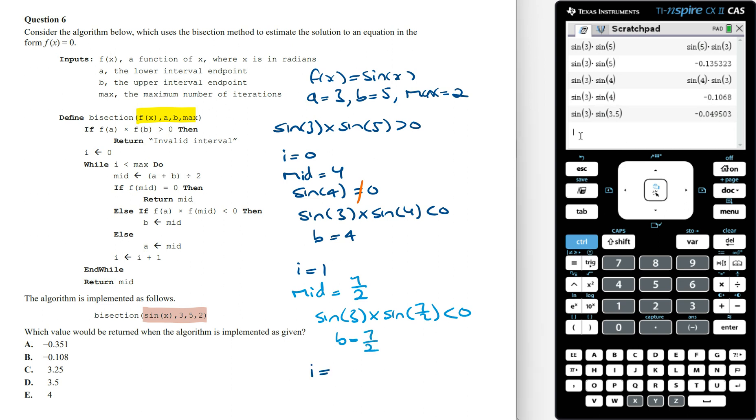From here we update the i value, so this is going to equal 1 plus 1, which is equal to 2. Now this is going to close the while loop. This algorithm is going to return the mid value, which is equal to 7 on 2. And this is option D.